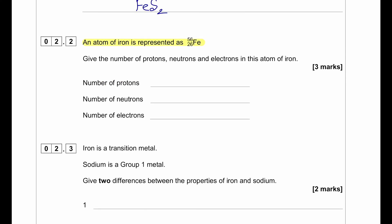An atom of iron is represented as ⁵⁶₂₆Fe. Give the number of protons, neutrons, and electrons in this atom of iron. The number of protons is 26. Since it is an atom, the number of electrons is also 26. The number of neutrons is 56 minus 26, which equals 30.